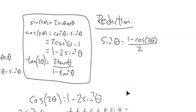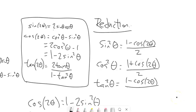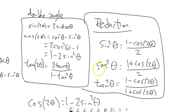Similarly, through the same algebraic steps, we can derive reduction formulas for cosine squared and tangent squared as well. These formulas let us rewrite sine, cosine, or tangent raised to a power in a lower power — expanding them out so we no longer have trig functions to an exponent.